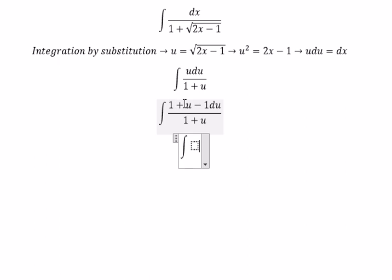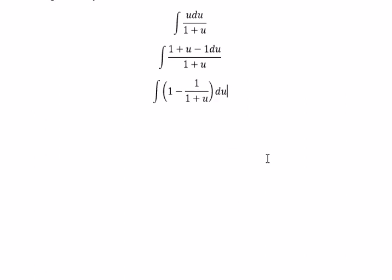We have one plus u divided by one plus u. We got bound number one and we have negative one over one plus u du. And now we get the final answer.